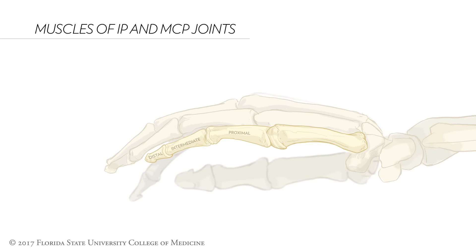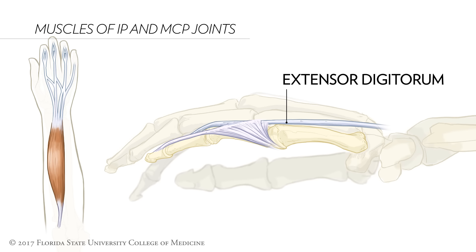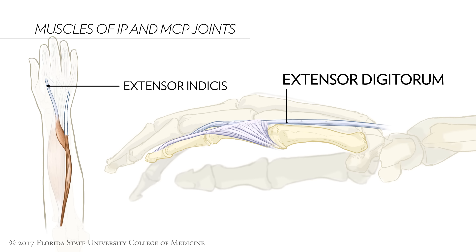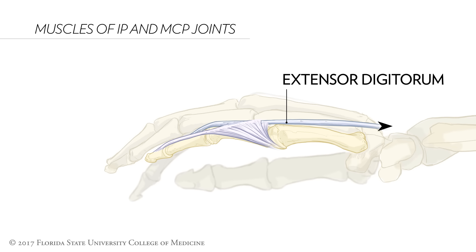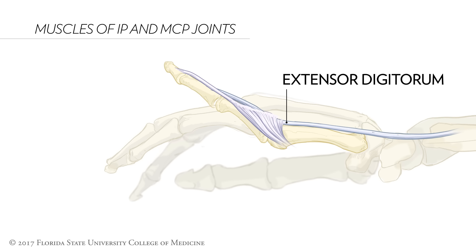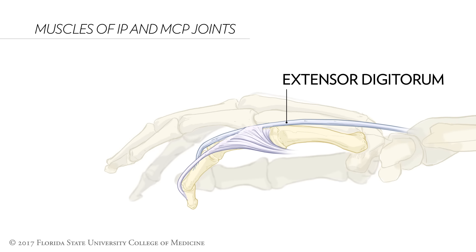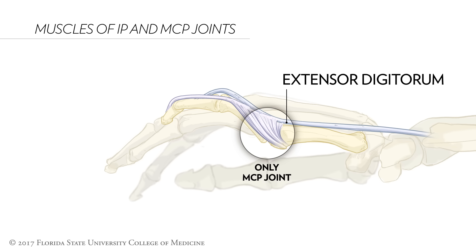Extending out to the proximal and distal phalanges of digits 2 through 5 on the dorsum of the hand are the tendons of extensor digitorum. On digit 2 and digit 5, extensor digitorum is accompanied by the extensor indicis and extensor digiti minimi muscles, respectively. However, the basic mechanics of finger extension are not altered by these two additional muscles, so the remainder of our conversation will focus on extensor digitorum as the sole extensor compartment muscle going to digits 2 through 5. Extensor digitorum is a powerful extensor only of the metacarpophalangeal joint; it is quite ineffective at extending the interphalangeal joints.